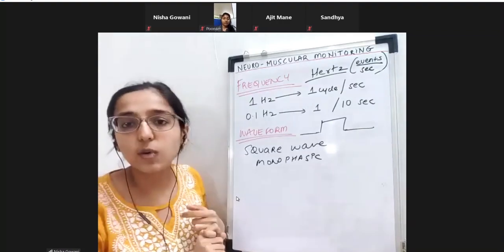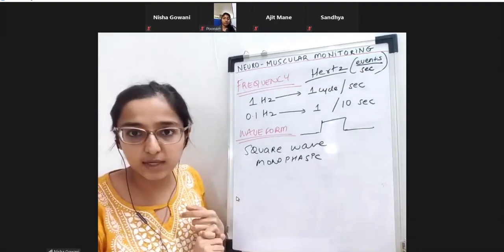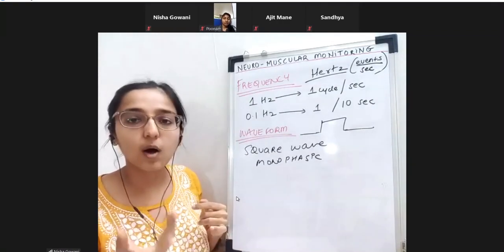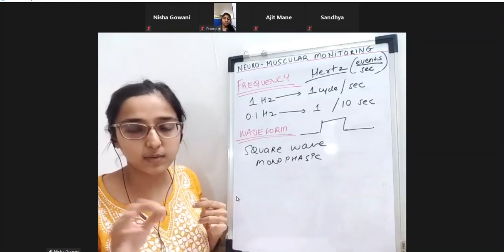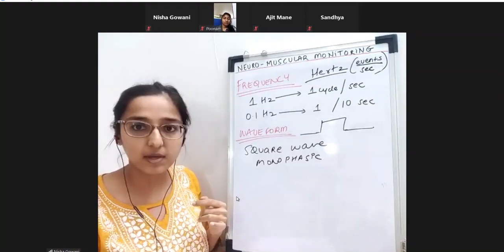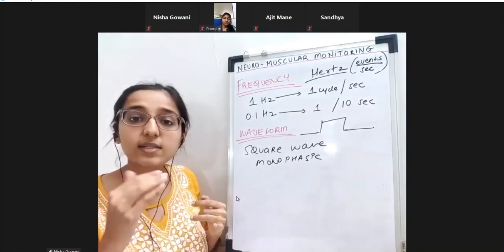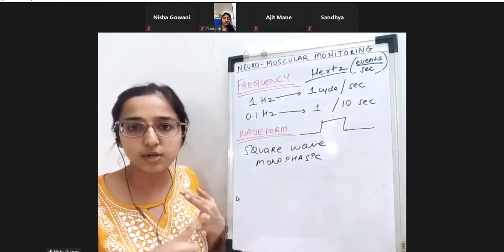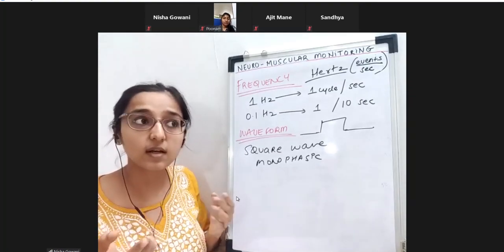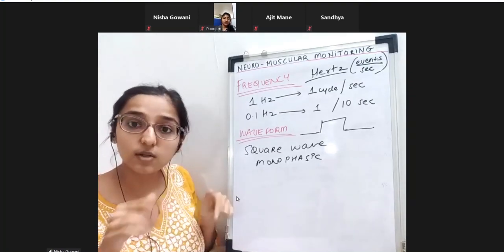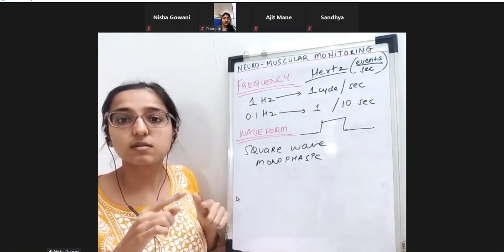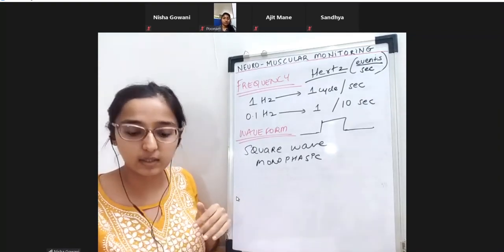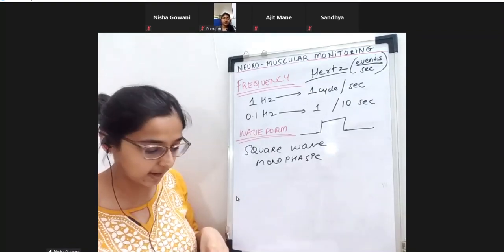Next comes the stimulation pattern - the frequency and manner in which current is given. We have single twitch, train of four, and others. Before that, we will understand the structure of this stimulator, and then the different ways in which we can stimulate the nerve.